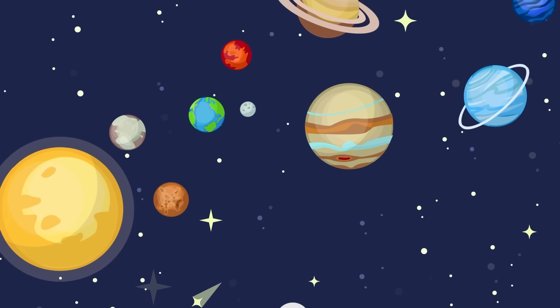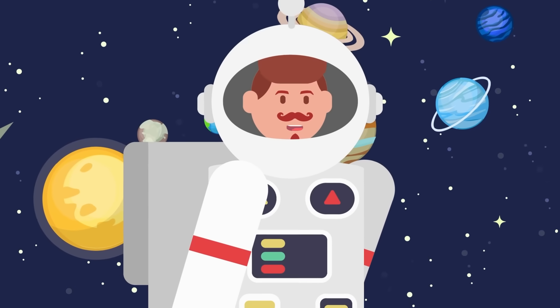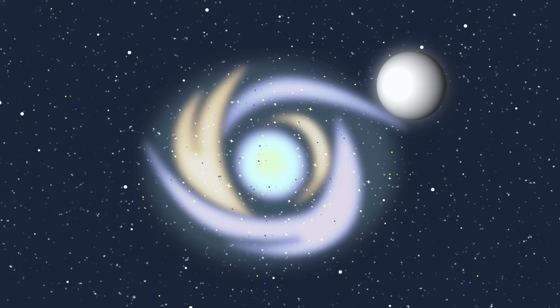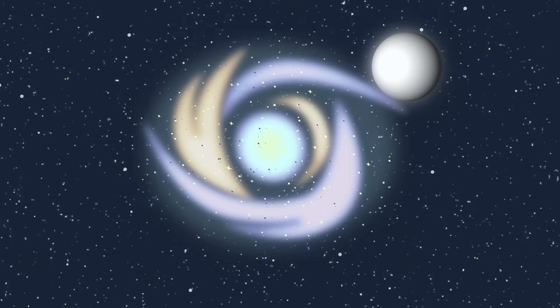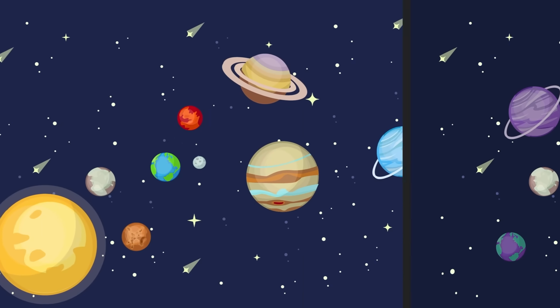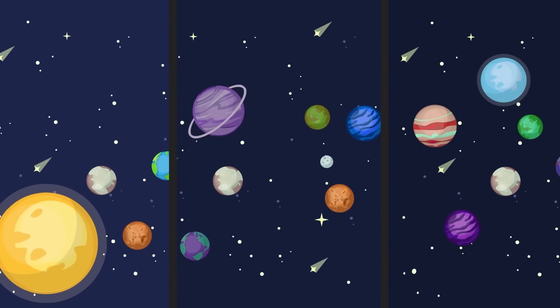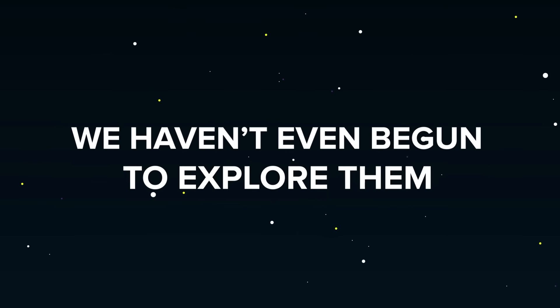That means that while there might not be any habitable worlds in our solar system, there are as many as a hundred thousand million stars in the Milky Way galaxy alone, surrounded by an untold number of planets, all of which have the same chance of being habitable for humans, and we haven't even begun to explore them.